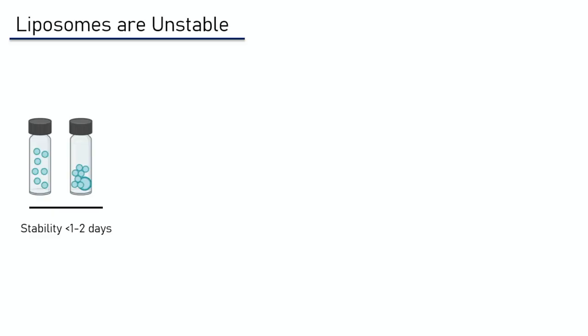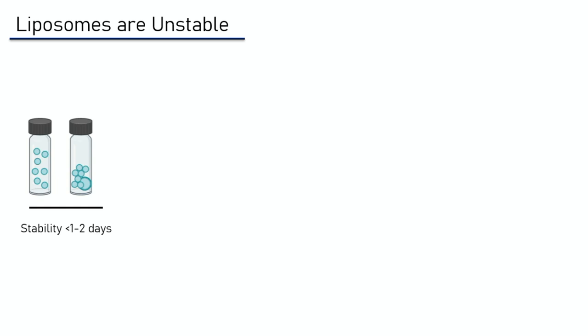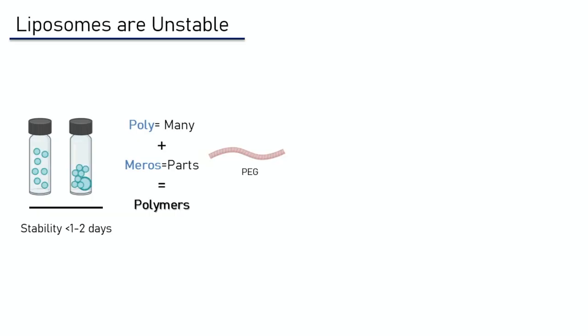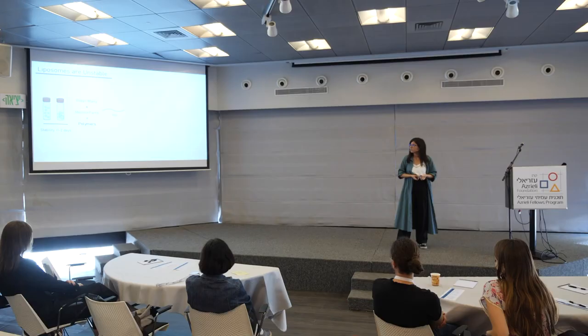The problem with liposomes is that when you make them, you have an amazing solution at the beginning with tiny bubbles. But in less than 48 hours sometimes, those bubbles stick with each other and you have aggregates, so you cannot actually deliver your drug efficiently. The common strategy is to put around your liposomes molecules called polymers — a word coming from the Greek poly, meaning 'many,' and meros, meaning 'parts,' so a polymer is something made of many parts of the same thing. But the problem is that those polymers stabilize the liposomes, yet the ones used so far are not lubricating at all.